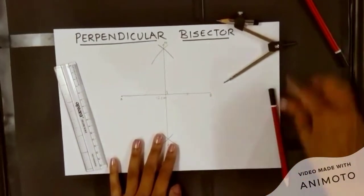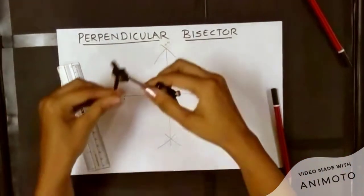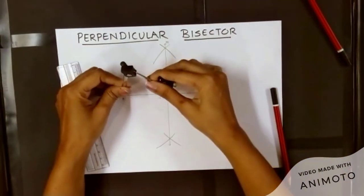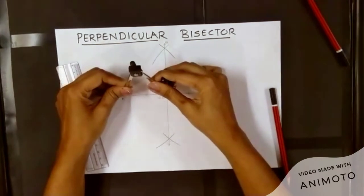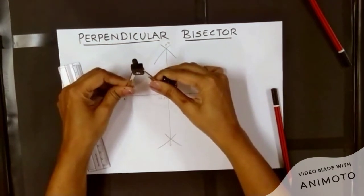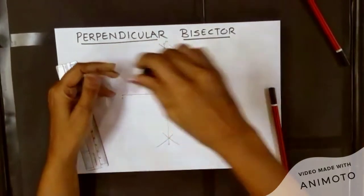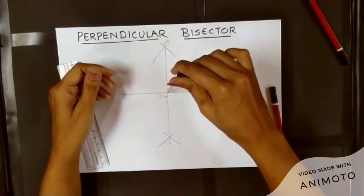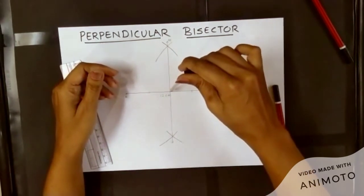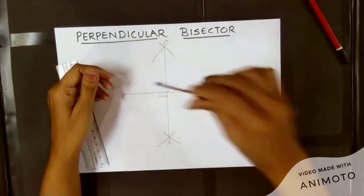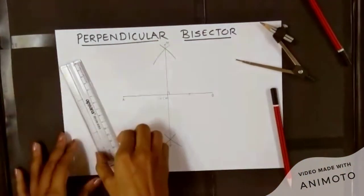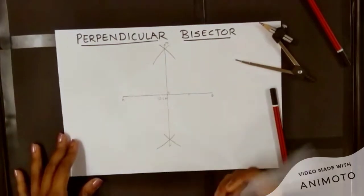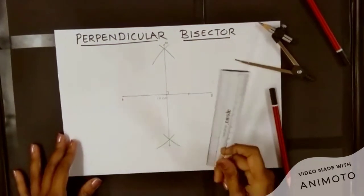You can cross-check this by keeping your compass and pencil on one side — it's the same distance on the other side. You can even cross-check this by measuring the two distances using the ruler.